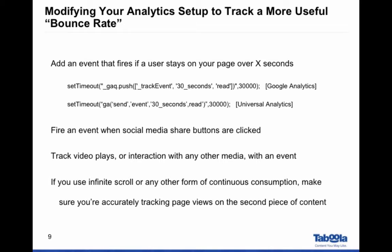Another common example is to fire an event whenever social media buttons are clicked, or anything else we consider a goal on our page. Tracking video plays, clicking through a slideshow — anything along those lines can be marked up to reduce our bounce rate. When you make these changes, your bounce rate will likely drop quite a bit, but then you have a new baseline you can optimize against. Also, if you're using infinite scroll or any form of continuous consumption with auto-loading new content, we want to make sure that's marked up properly so that we're triggering a page view when the user comes to the second, third, or fourth article. That'll make the bounce rate more accurate for A/B testing decisions.